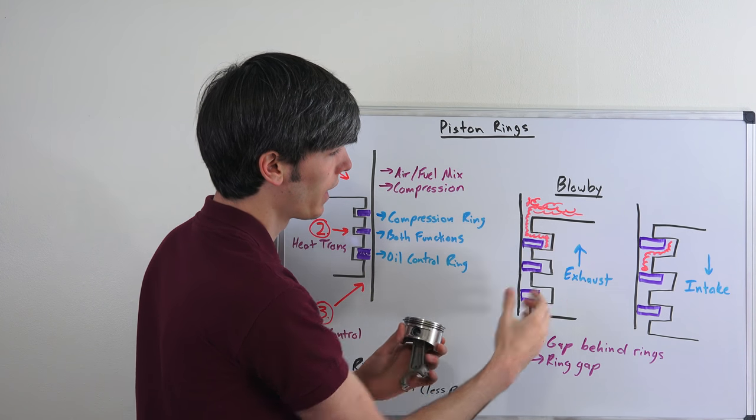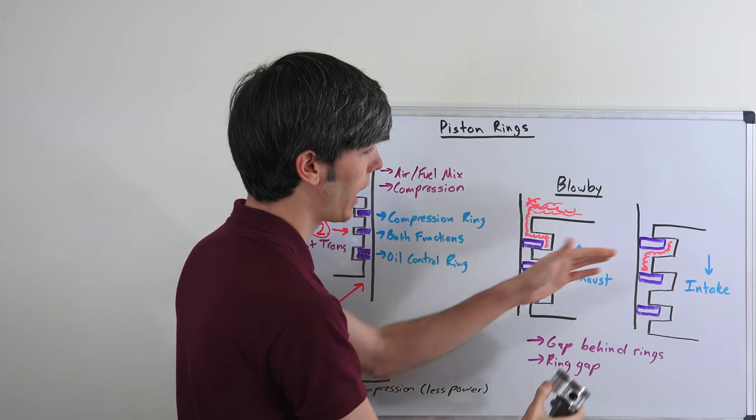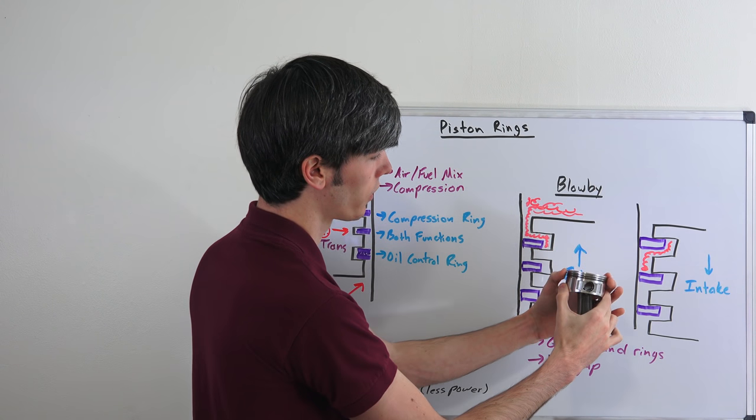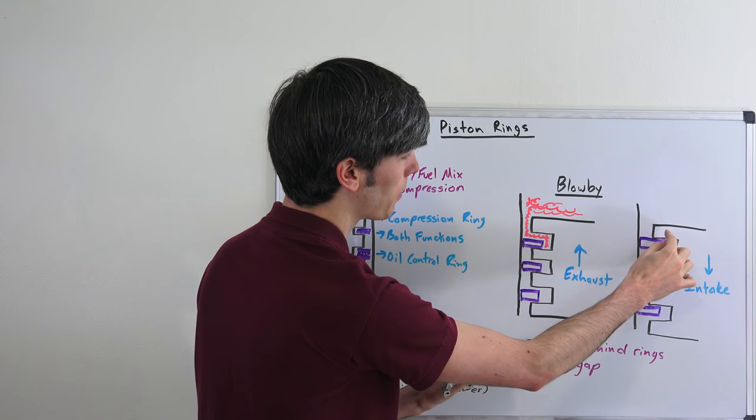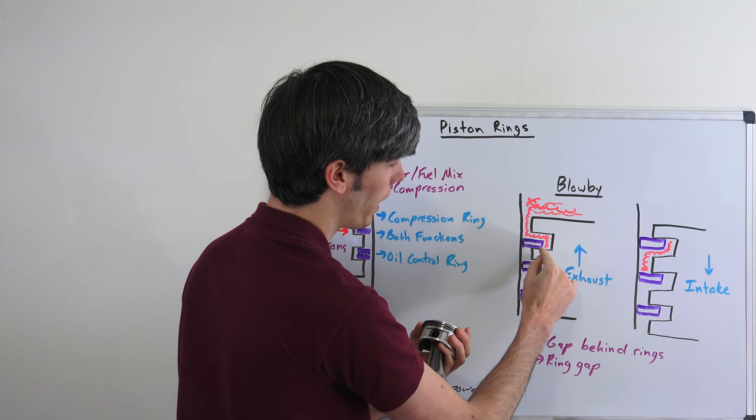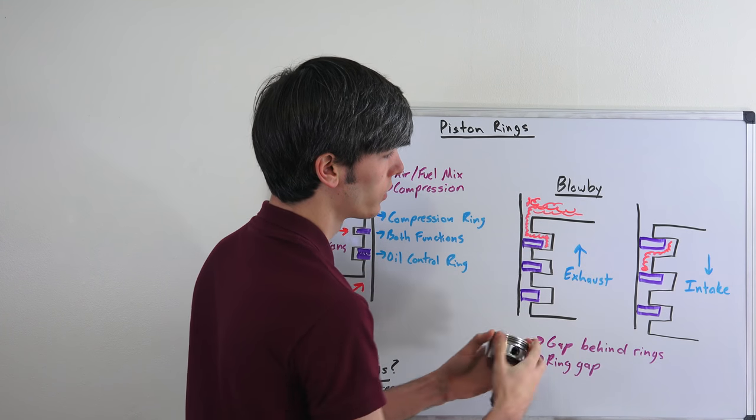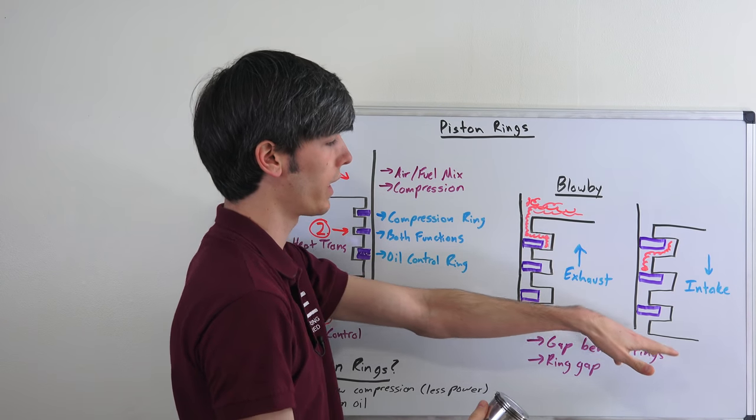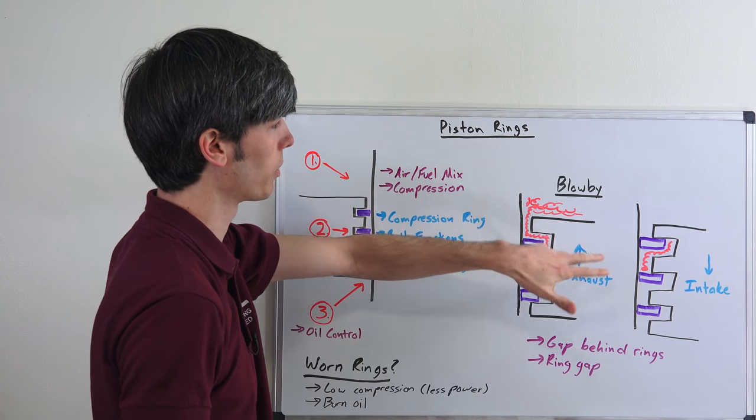Your exhaust fumes and gases can get behind that gap and then on your intake stroke which occurs after your exhaust stroke, these pistons are then going to move up. As they move up and hit the top of the piston, those gases can now pass underneath them and travel down, eventually making their way into the crankcase. That's blow-by where you're getting gases from your combustion chamber into your crankcase.